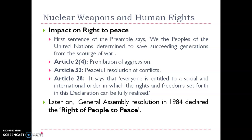Article 28 states that everyone is entitled to a social and international order in which the rights and freedoms set forth in the declaration can be fully realized. Every human being wants social order to be established, and war and nuclear weapons pose a great risk to that. Later, a General Assembly resolution in 1984 declared the right of peoples to peace as a fundamental human right that should be given to every human being.